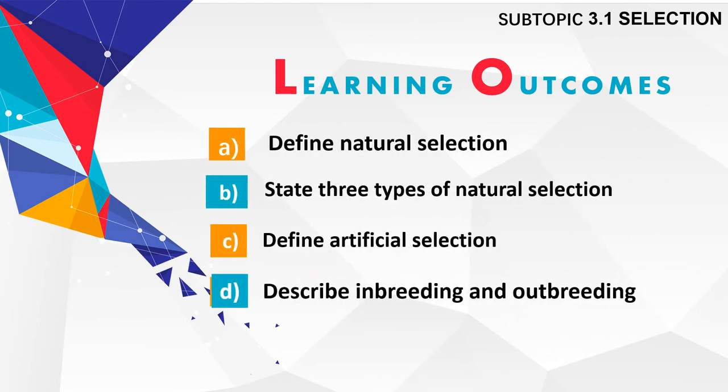Subtopic 3.1 Selection. Learning outcomes: define natural selection, state three types of natural selection, define artificial selection, and describe in-breeding and out-breeding.